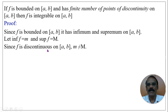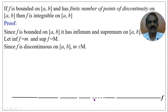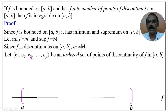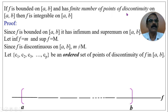Since f is discontinuous on the closed interval [a, b], the infimum m is not equal to the supremum M. We consider the function f as a straight line containing many points of discontinuity. Let c1, c2, c3, ..., cp be an ordered set of points of discontinuity of f in [a, b]. It is given that f has a finite number, p, of points of discontinuity.